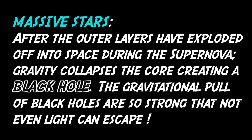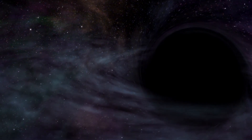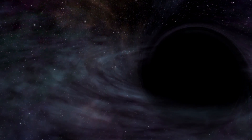For massive stars, after the outer layers have exploded off into space during the supernova, gravity collapses the core, creating a black hole. The gravitational pull of black holes is so strong that not even light can escape. What is left of the star is a stellar black hole — an object of enormous density, creating a gravitational field that even photons cannot escape.